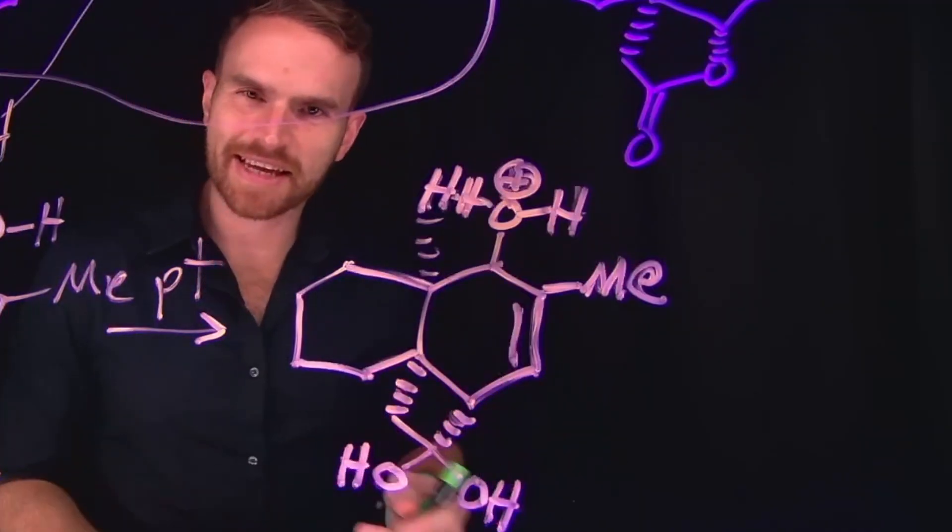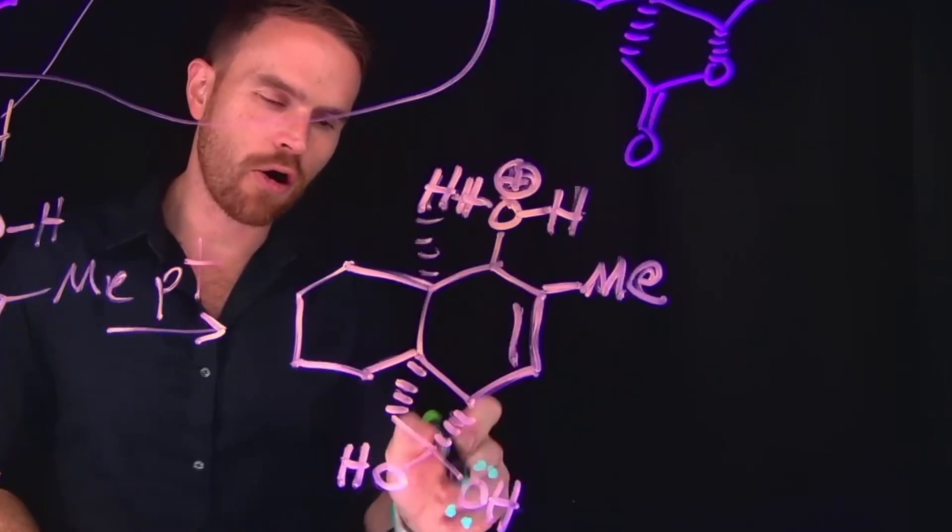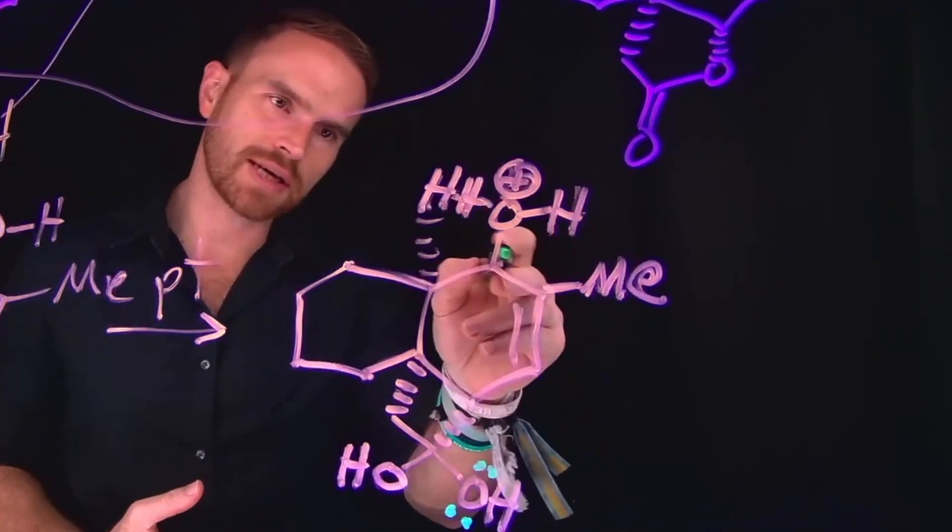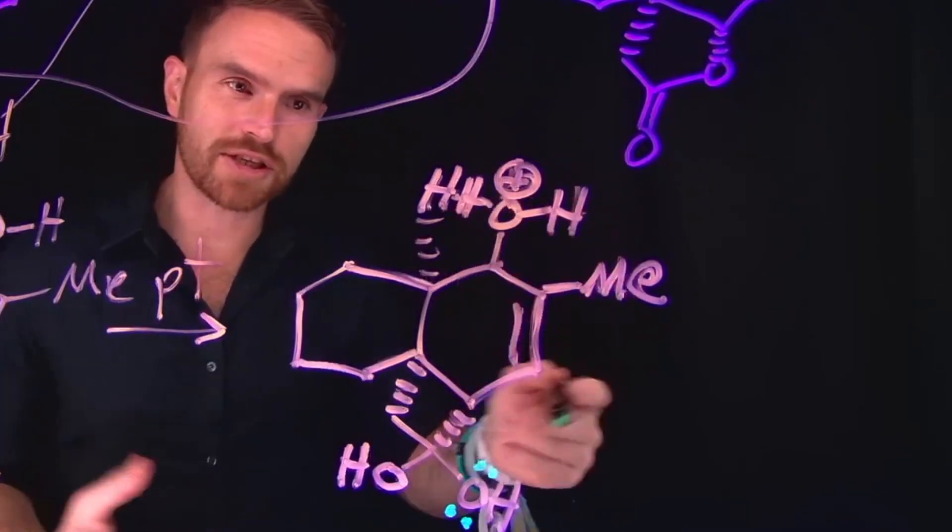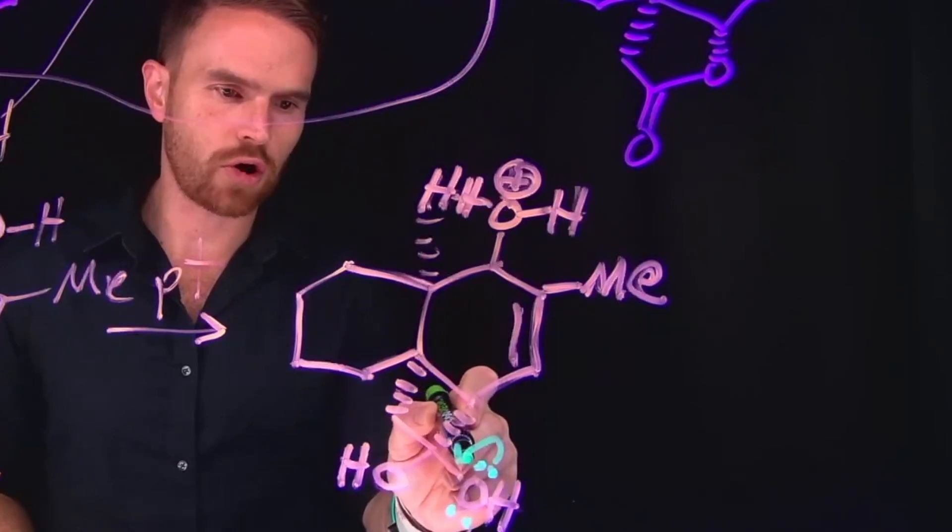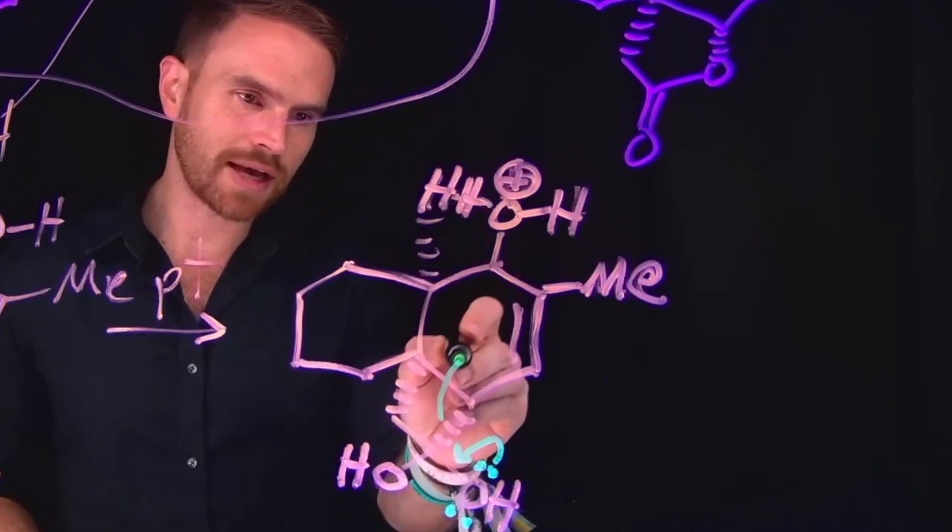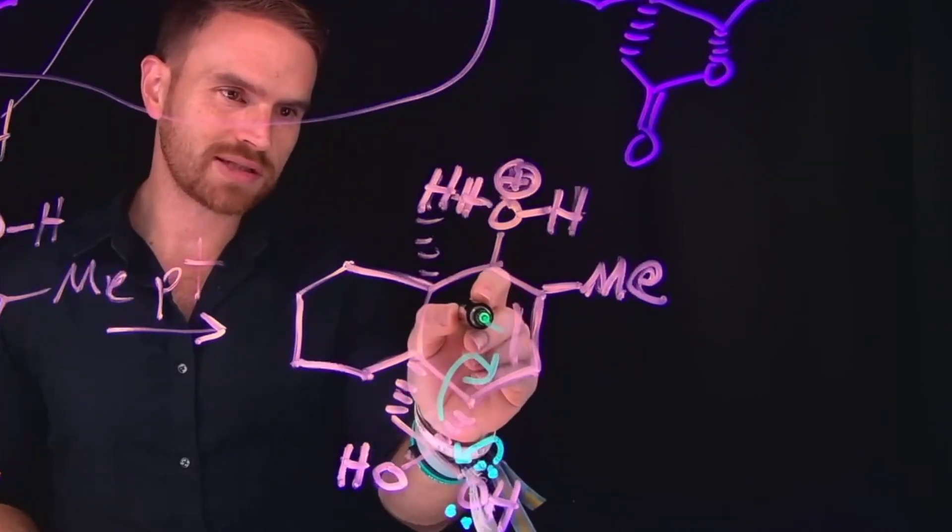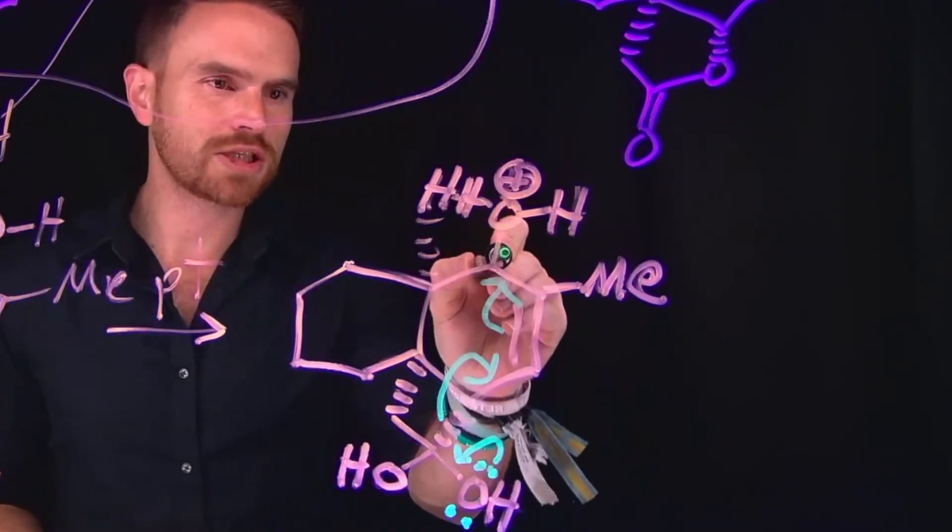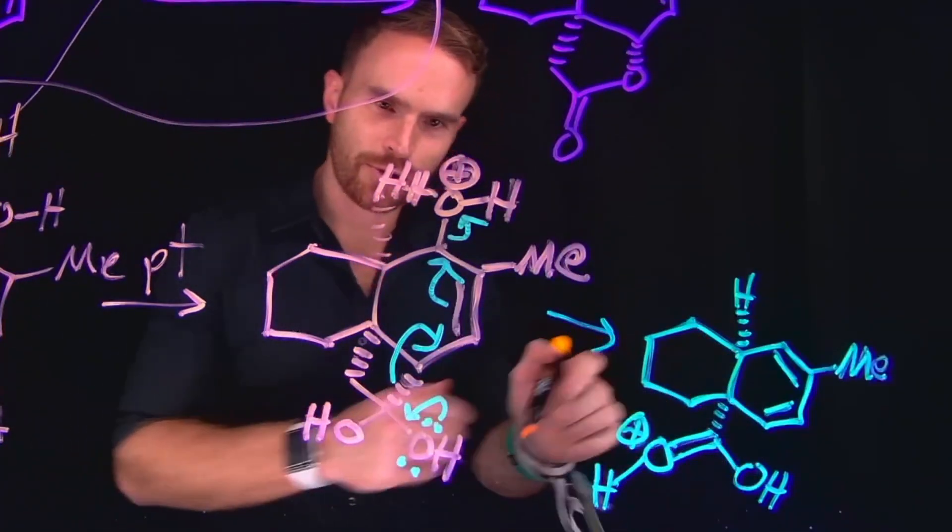And from here, what we can have is a cascade of electron flow, where we would take the lone pair of electrons on this alcohol, and what we're going to see is several different electron movements are going to happen, which eventually kick off this very good leaving group. Now that we have this positively charged water molecule, which can act as a good leaving group. So these can come down to form our new carbonyl, which is then going to open this ring right here and move these electrons to this position, which is then going to move these electrons over into this position to reform a different type of pi bond, which is going to liberate that water molecule as a good leaving group. And that is going to generate this intermediate as your next step.